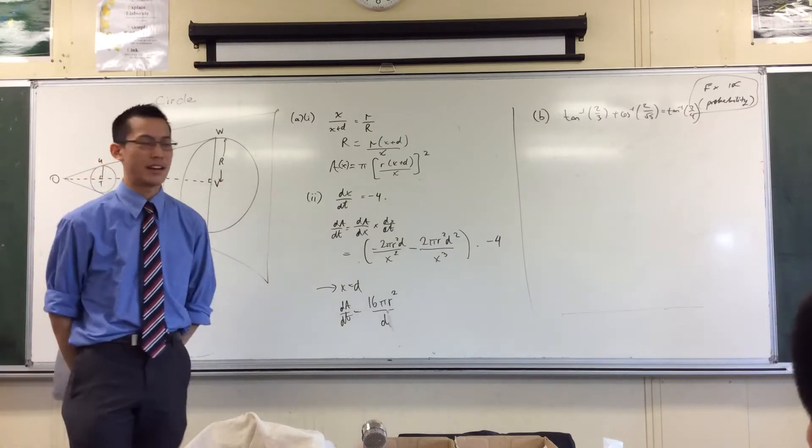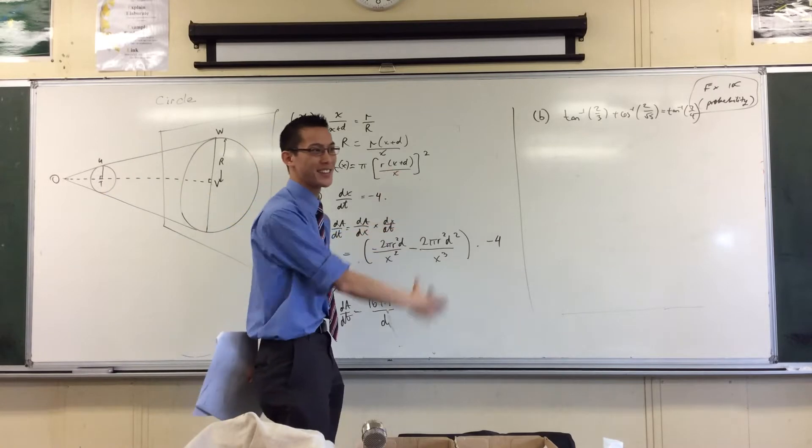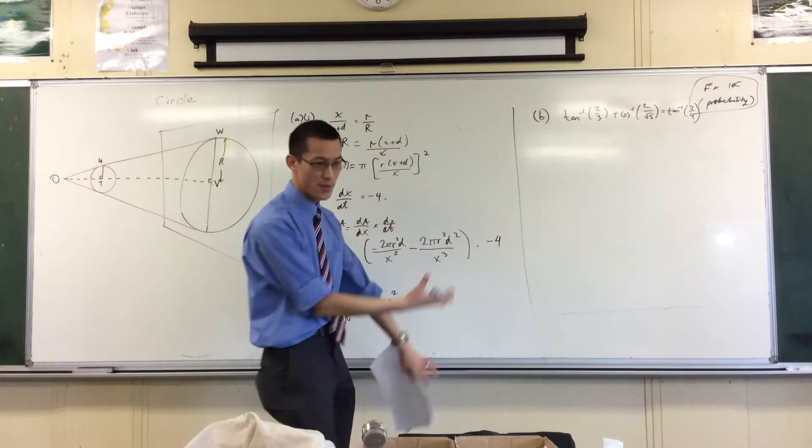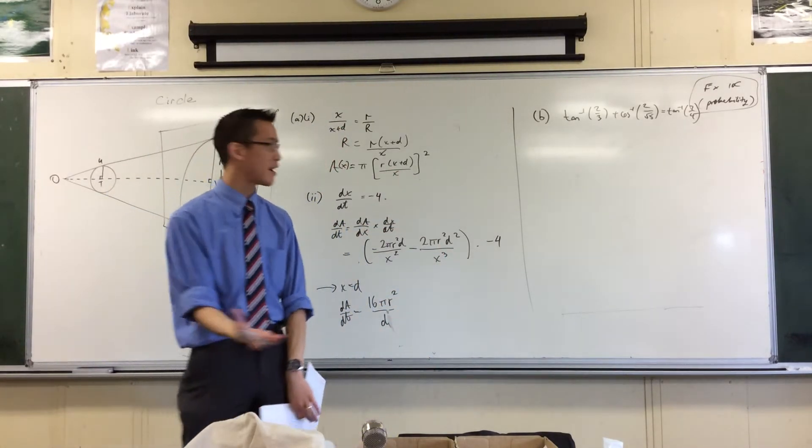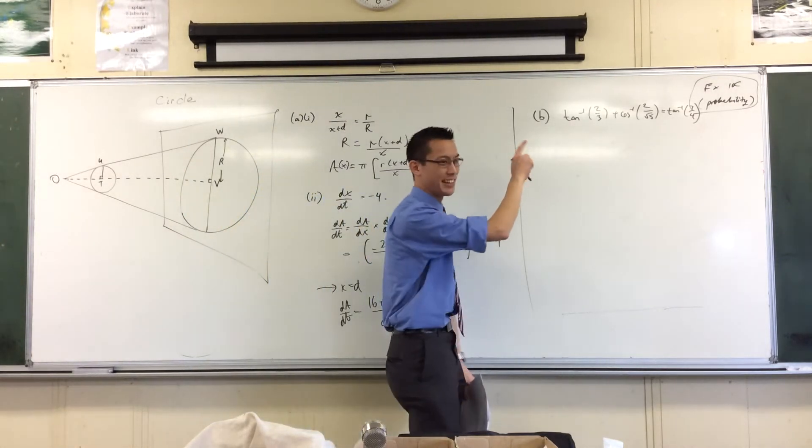Because you're required to prove this right, you can't use this as a starting point and then take tan of both sides, because then you've assumed what you're required to prove. So you absolutely cannot take tan of both sides of this line.